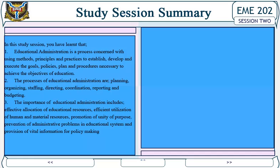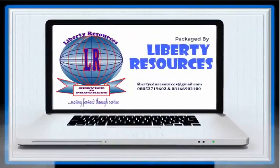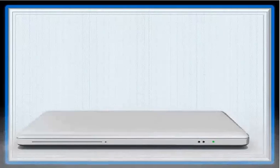C. Efficient utilization of human and material resources: The effective allocation of educational resources facilitates adequate utilization of these resources. When the right person is placed in the right job, he or she enjoys the use of their expertise with ease. Material resources that are judiciously allocated also result in efficient use of such resources for the achievement of the desired educational objectives.